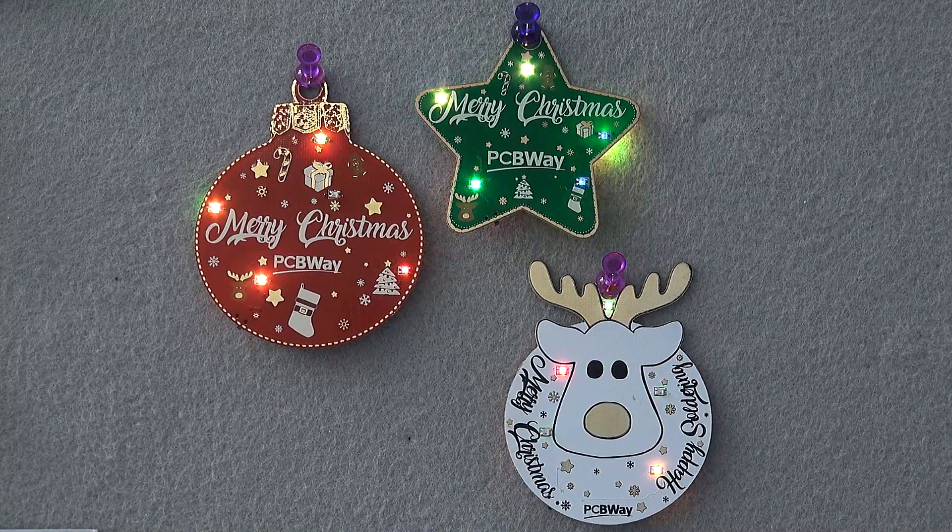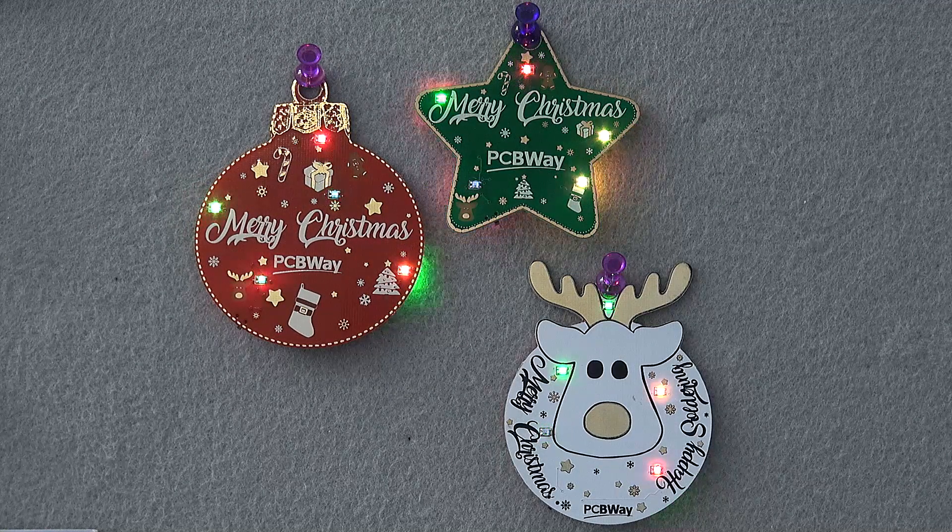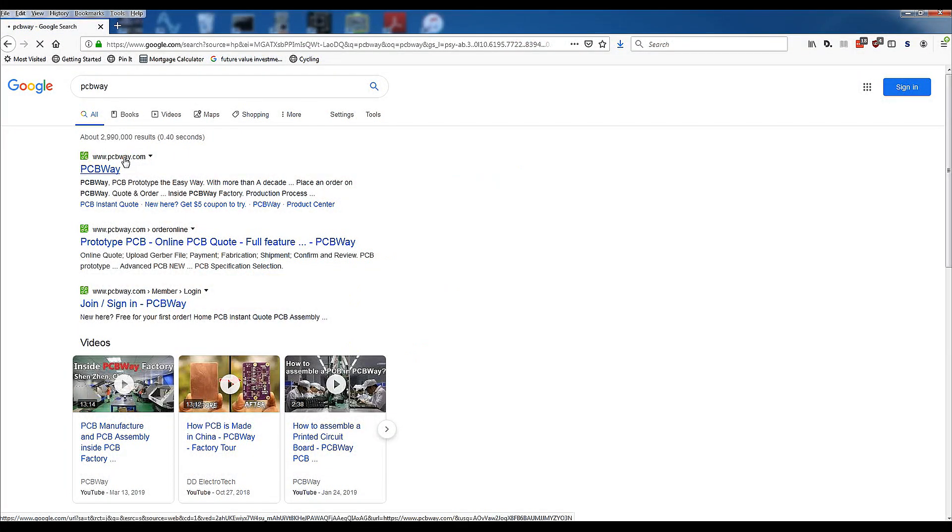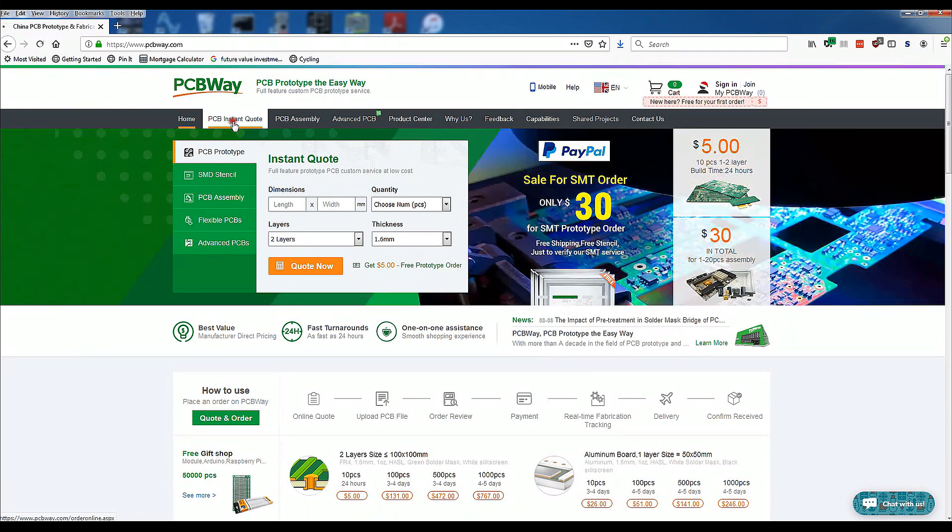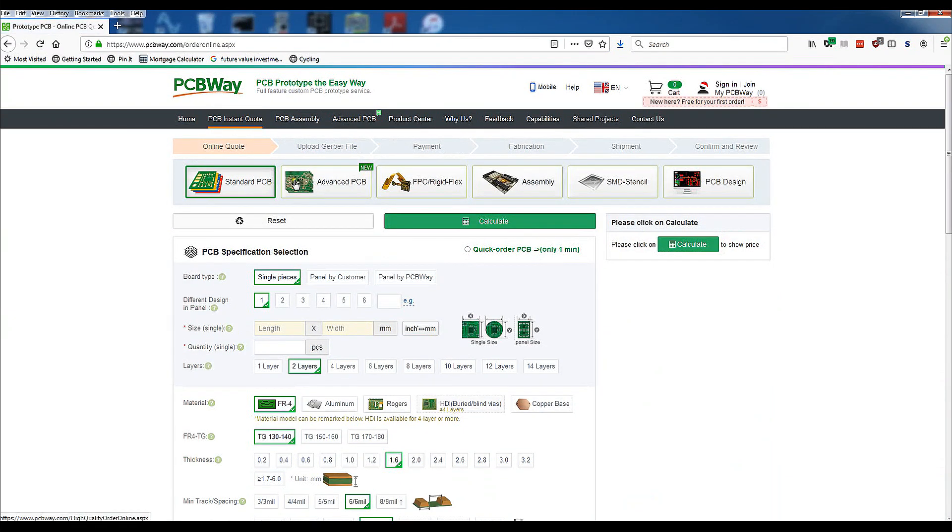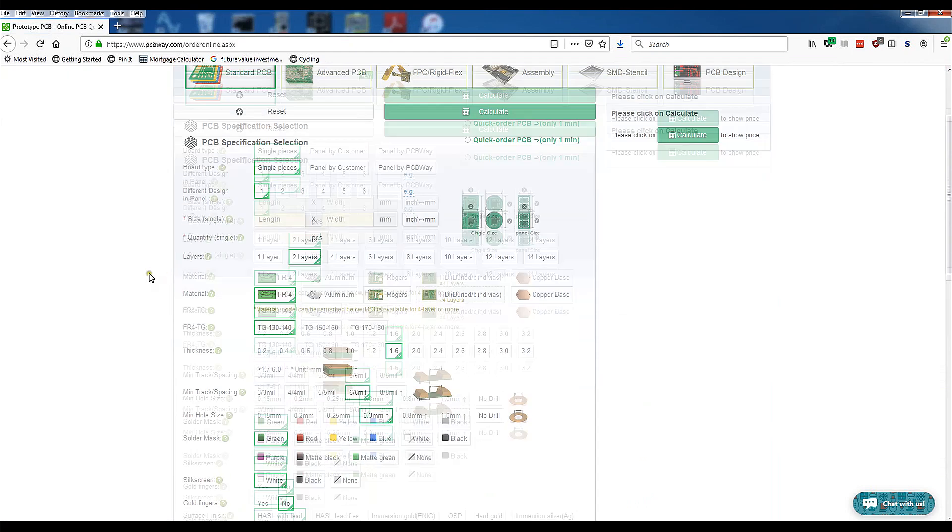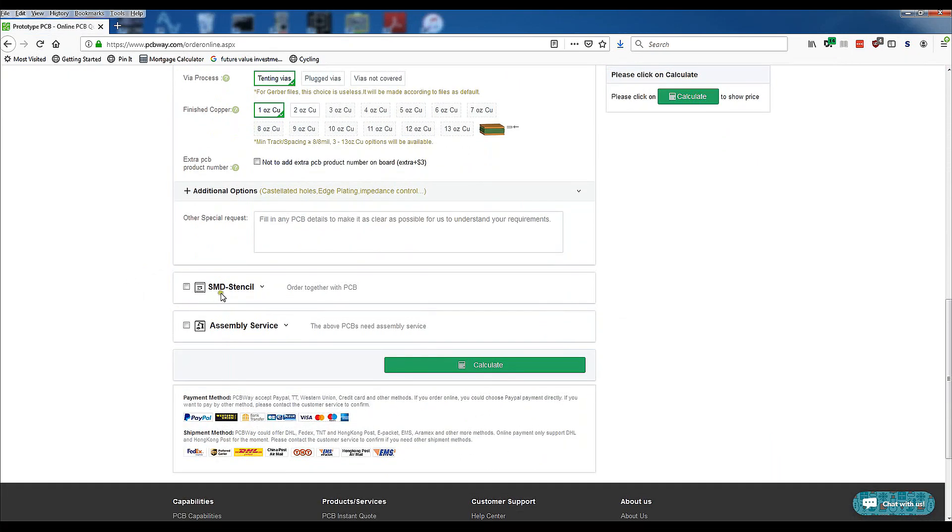Whether you need some fun PCBs for the holidays or something more serious, head over to the PCBWay website and click on the PCB instant quote. Then you can select various types of PCBs and your PCB specifications. You can then select if you want the stencil mask and even the assembly service. Then click calculate and simply place your order.